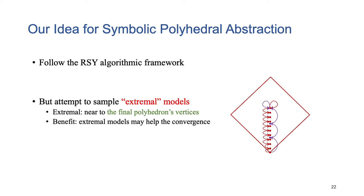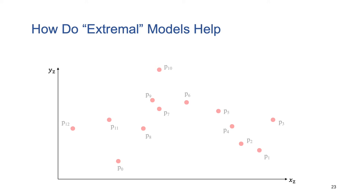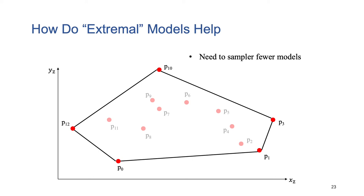Our approach follows the RSY framework. In comparison, we attempt to sample extreme models, which may help the convergence. For example, intuitively, we know that the models P0, P1, P3, P10, and P12 are extreme. If we can compute the five models, their convex hull is exactly the final solution. In this way, we can compute fewer models than the RSY approach. Luckily, such models always exist, because every bit-vector formula is bounded.